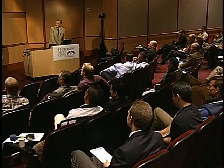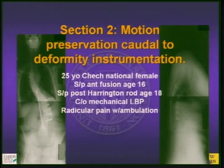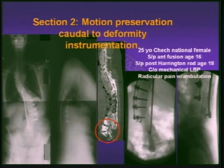In the next section, we'll explore motion segments failing caudal to our instrumentation. The case at hand is a 25-year-old Czech female who had a fusion done in her home country at age 16. For reasons that are difficult to elicit, something was felt to go unbalanced, and she received a Harrington rod fusion. She later immigrated to our country and now has severe back pain and radicular pain with ambulation. The CT scan and myelogram show that her foraminal and root zones are cut off.